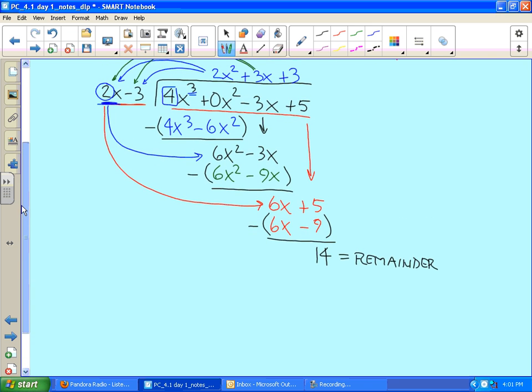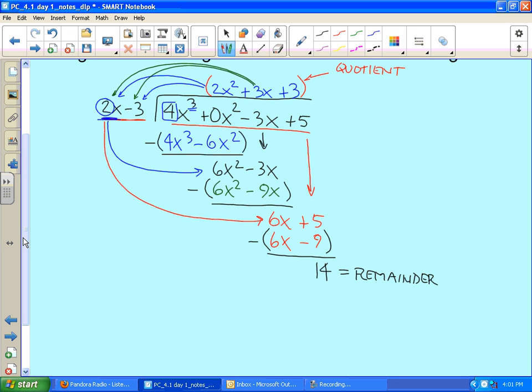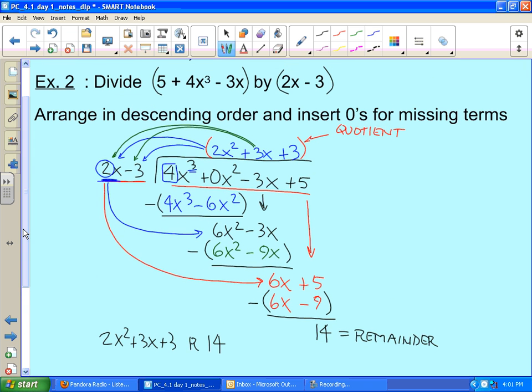So how would we write this? The answer to this is - this part right here is the quotient, then we have our remainder. So a couple different ways we could write this: we could say the answer is 2x² + 3x + 3 with a remainder of 14. So there's our answer from dividing 4x³ - 3x + 5 divided by 2x - 3.